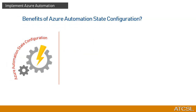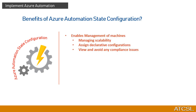Now that we understand what Azure Automation State Configuration is, let's understand the benefits of using it over state configuration outside of Azure. The first benefit is that it enables the management of machines from a central location. This includes managing scalability, assigning declarative configurations, and viewing and avoiding compliance issues by reporting any deviations from the desired state configuration.